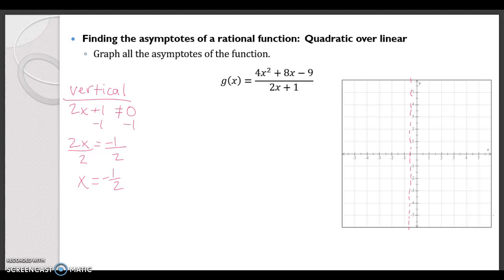All right, but what about the horizontal? Well, n is greater than m. The degree of the top is greater than the degree of the bottom, but because the degree of the top is 2 and the degree of the bottom is 1, the degree of the top is 1 more than the degree of the bottom. So that means we're going to have a slant asymptote.